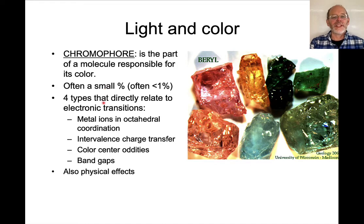There are four types that directly relate to electronic transitions. We'll talk about metal ions in octahedral coordination, intervalence charge transfer, some odd features of color centers and band gaps. And then there's another feature which is unrelated to electrons directly, and these colors are a manifestation of physical effects.